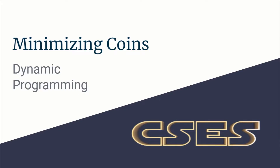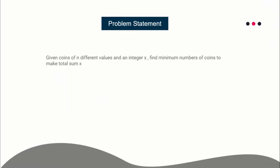Hello guys, this is Code in Code, and this is the video editorial for the problem 'Minimizing Coins' from CSES. This is from the dynamic programming category. The problem statement is: you are given n different values of coins and an integer x, and you have to find the minimum number of coins required to make the total sum x. For example, there are three different coins of value 1, 5, and 7, and the total sum you have to make is 11.